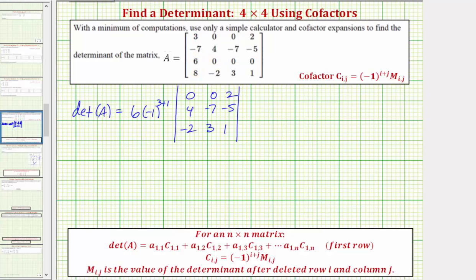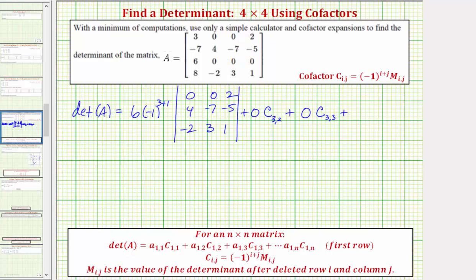Again, the next element in row three is zero, so we'd have plus zero times the cofactor C sub three comma two. Plus the next element in row three is also zero, so we'd have plus zero times C sub three comma three. Plus the last element in row three is also zero, so we'd have zero times the cofactor C sub three comma four, because this element is in row three column four.